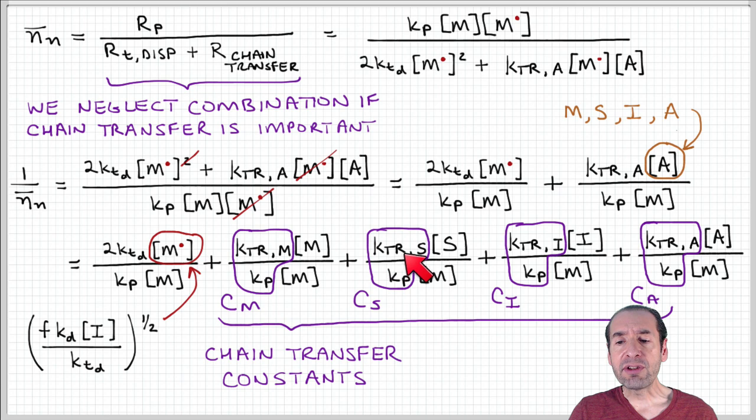And then notice that each of these other terms includes a ratio of rate constants. In fact, it's the ratio of a rate constant associated with the transfer process to the rate of propagation. So I can express these rate constant ratios in terms of these parameters that I'm going to call chain transfer coefficients, CM, CS, CI, and CA.